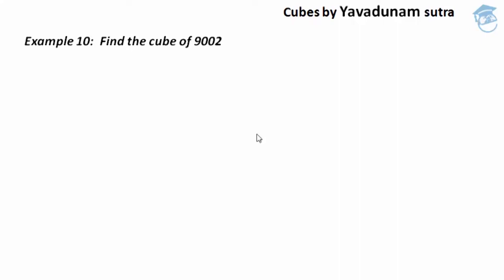In order to find the cube of 9002, we have some parts of procedures to follow. The first part is the left part. In the left part, the first step is to find the nearest base of the given number 9002, and the nearest base of 9002 is 9000.